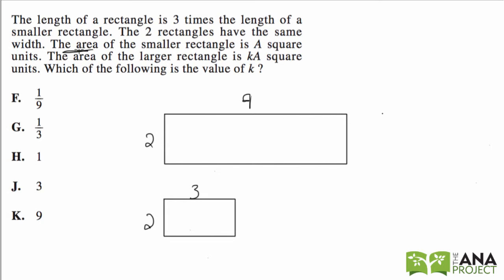The area, so when we see area, let's just go ahead and figure out the area of both rectangles. So nine times two, the area of the larger rectangle is 18. Three times two, the area of the smaller rectangle is six.